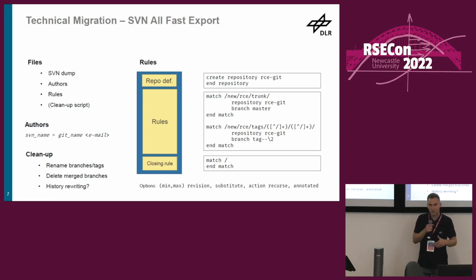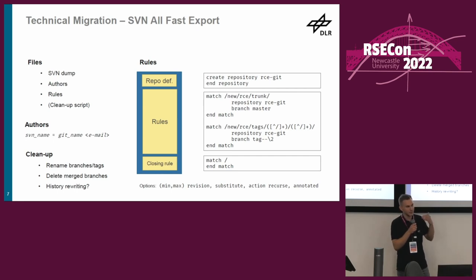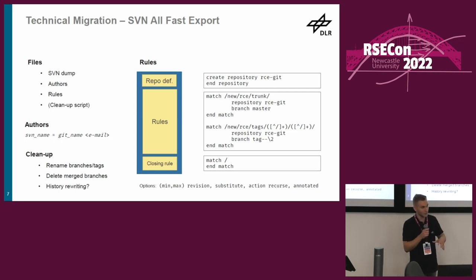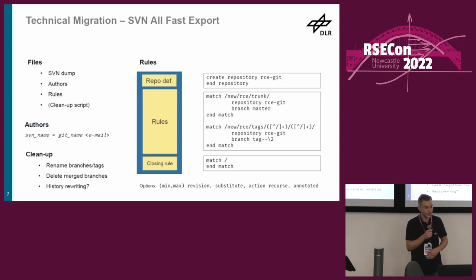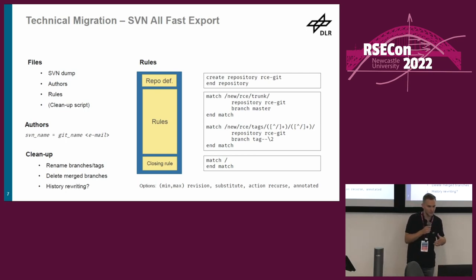A little more advanced is migrating our hierarchical tag directory. We're interested in the release name and version, so we use groups within hierarchical regular expressions to get the name and create branches prefixed with 'tag--', referencing the second matched group — the release version. At the end, there's a closing rule since every path must be matched. After creating the Git repository, you may want to do some cleanup: rename branches, delete already merged branches, or do some history rewriting. We decided against history rewriting because we want the Git history to be as close as possible to what it was in Subversion.